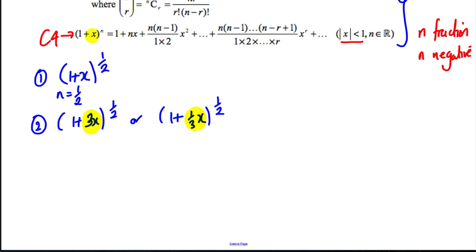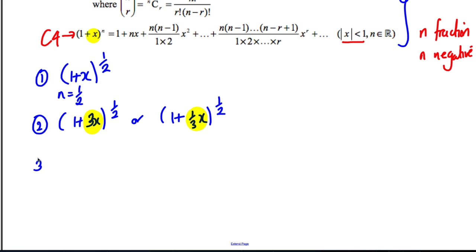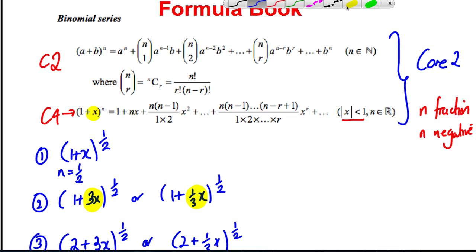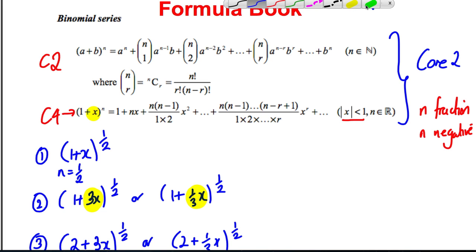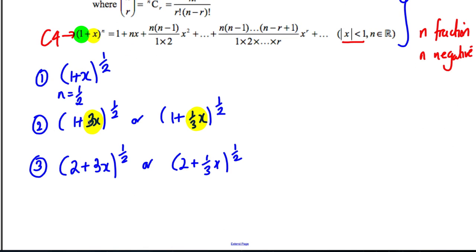The most complicated case that would come up is if it's of the form (2+3X)^(1/2) or (2+X/3)^(1/2). You'll notice it's not of the form in the formula booklet - this number must be equal to one. If it isn't, you must make an adjustment. In this case you would factorize the two out, so it would be 2^(1/2) × (1+3X/2)^(1/2).